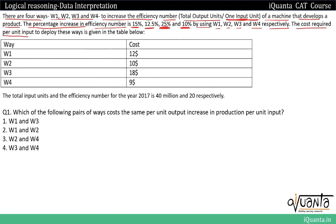The cost required per unit input to deploy these ways is given in the table. If we employ W1, the cost per unit input is $12; $10 for W2; $18 for W3; and $9 for W4. The total input units and the efficiency number for the year 2017 are 40 million and 20 respectively.